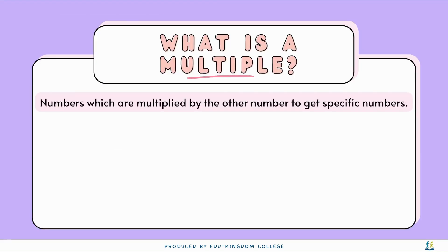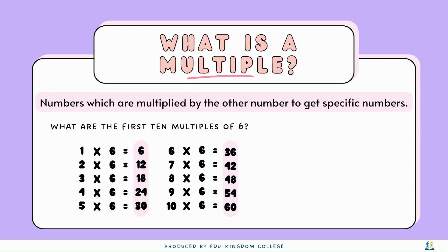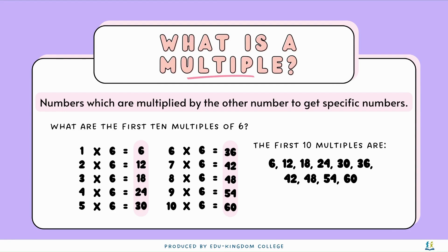Now, moving on from multiples — what is a multiple? Multiples are numbers which are multiplied by another number to get specific numbers. Let's have a look at an example: what are the first 10 multiples of 6? Multiples are the results of the times tables. So 1 times 6 gives 6, 2 times 6 gives 12, 3 times 6 gives 18, and so on. The first 10 multiples of 6 are 6, 12, 18, 24, 30, 36, 42, 48, 54, and 60. All numbers have an infinite amount of multiples because you can multiply that number by as large a number as you want.